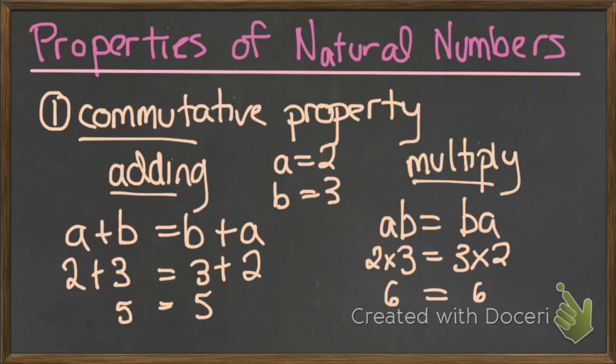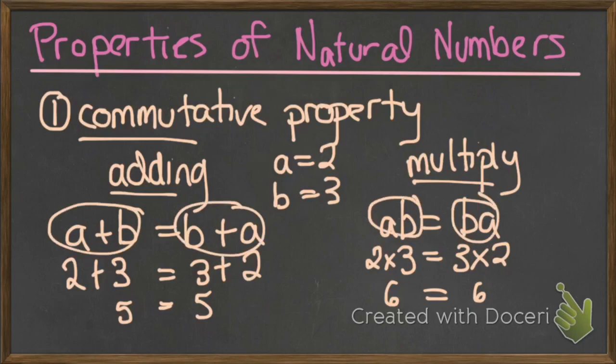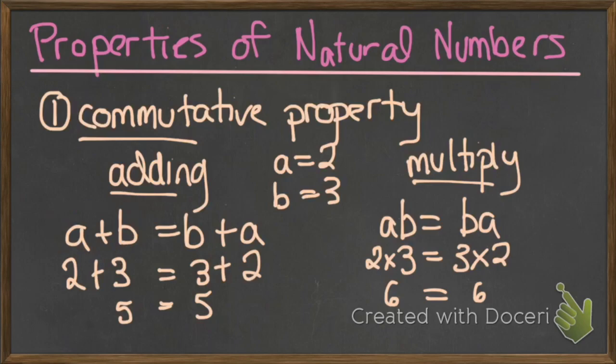That's what we call the commutative property. It applies when we're dealing with only addition or only multiplication — that's the only time. That's the first property.